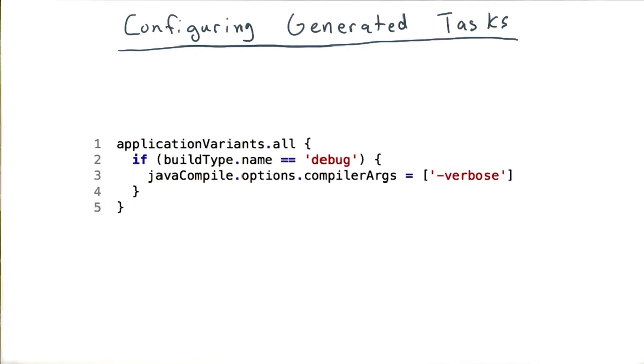We specify this configuration by calling the all method on our variant collection. For example, if we wanted to configure all the Java compile tasks for our application variants to add a compiler argument, we could do something like this. This will now configure each Java compile task for each of our debug build types, regardless of how many product flavors we have configured.